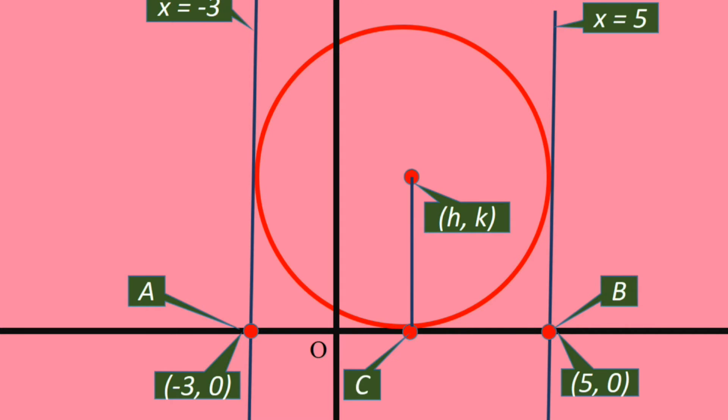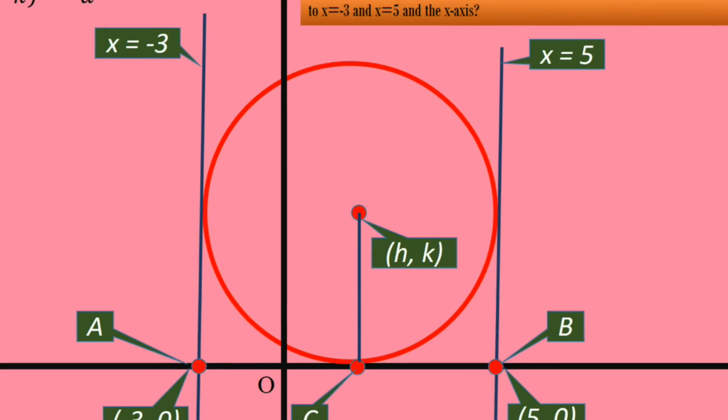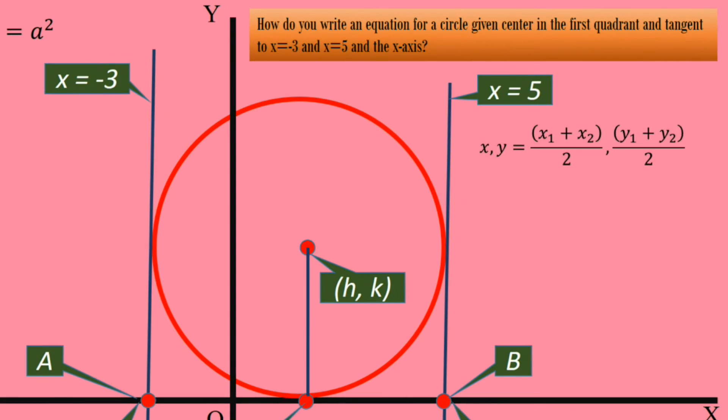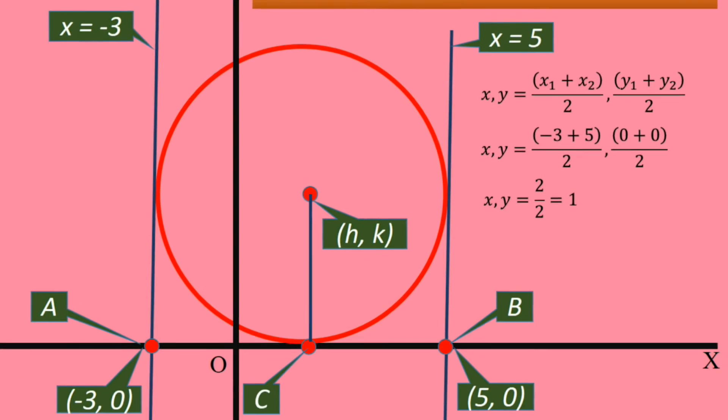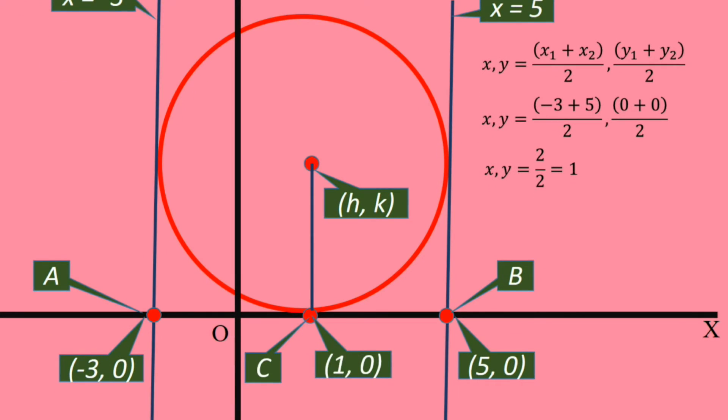Let us use the formula. xy of C = ((x1+x2)/2, (y1+y2)/2). Substitute the values. y1 and y2 are 0. -3+5 is 2, 2/2 is 1. Hence, point C is defined by (1,0).